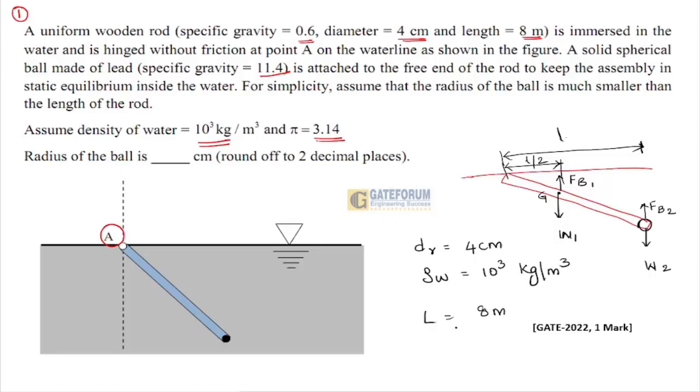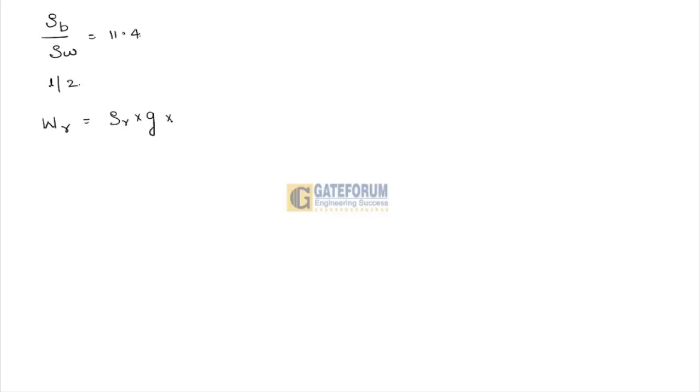The density of rod to density of water gives specific gravity 0.6 as given. The density of ball to density of water is 11.4. The distance to the center of the rod is L/2. The weight of the rod is: W₁ = ρ_rod × g × (π d_r² / 4) × L. The weight of the ball is: W₂ = ρ_ball × g × (4/3) × π × (d_b/2)³.